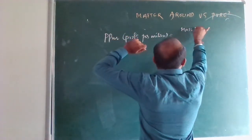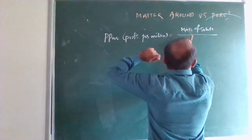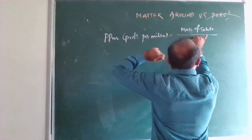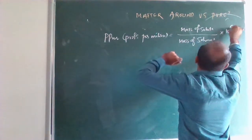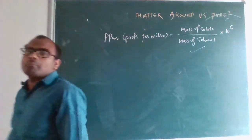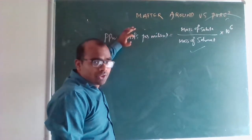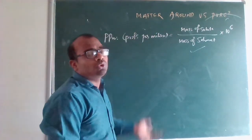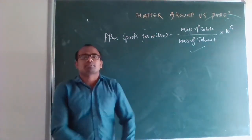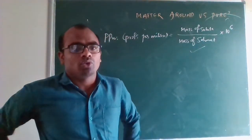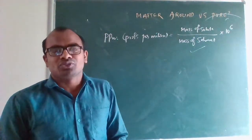Mass of solute divided by mass of solvent into 10 to the power 6 is called PPM — parts per million. In ten lakh (one million) we say it is million, and so PPM uses 10 to the power 6.